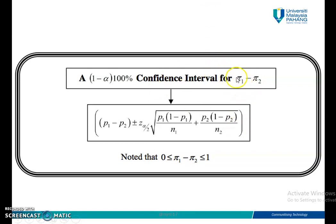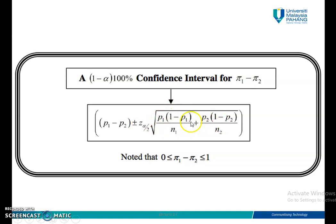In the formula, instead of 1 pi, you have 2 pi: pi 1 minus pi 2, or pi 2 minus pi 1 — it depends on the question. If the question uses pi 1 minus pi 2, the formula should reflect pi 1 minus pi 2, and vice versa. The formula uses a plus-minus structure with the Z table. The rest is the standard deviation, and the value should be between 0 and 1. Basically, pi 1 is a sample proportion, which is x over n, and now you have 2 populations.